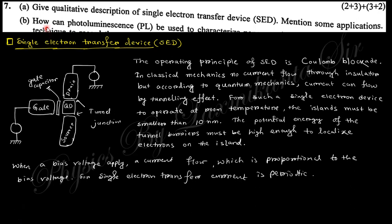Let's start. First question says: give a qualitative description of single electron transfer device. Single electron transfer device means the single electrons pass through, which controls the conductivity. These are made using quantum dots. There is a gate, drain, and source with a quantum dot. In the quantum dot, the band gaps are separated and a single electron transfers through this quantum dot.